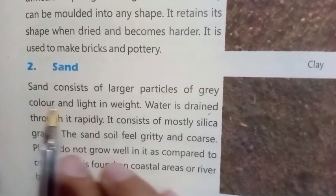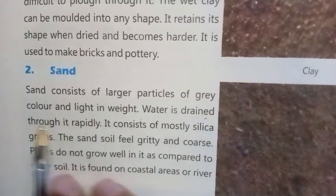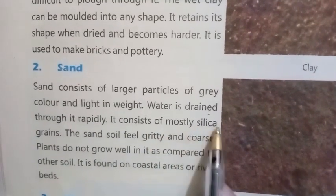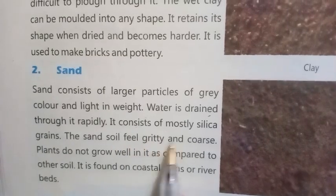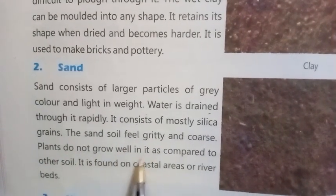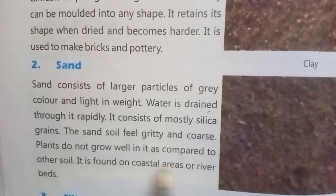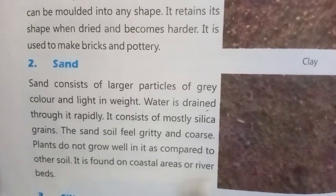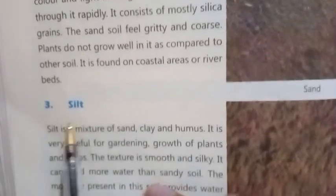Clay is used to make bricks and pottery. Number two: Sand. Sand consists of larger particles of grey color, light in weight. Water drains through it rapidly. It consists of mostly silica grains. The sand soil feels gritty and coarse. Plants do not grow well in sand soil compared to other soils. It is found on coastal areas or river beds.